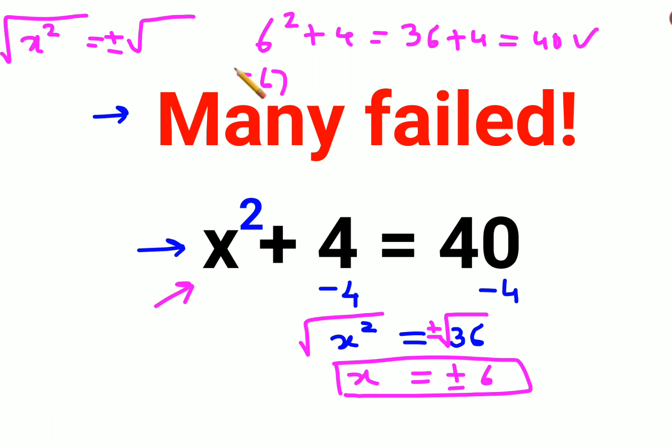Similarly, minus 6 square plus 4 gets you—square of a negative number also gets you a positive value. So 36 plus 4, that also gets you 40. So here we can say the value of x is equal to plus minus 6 is absolutely correct for this particular question.